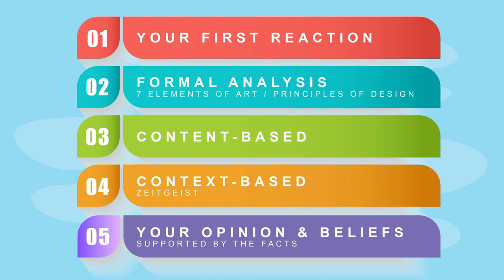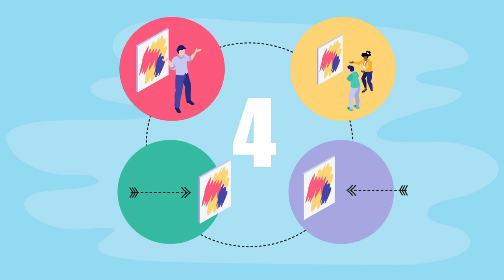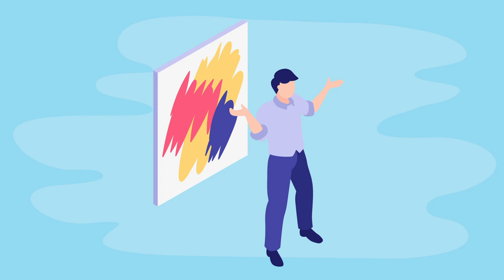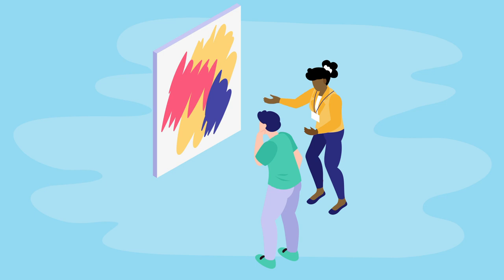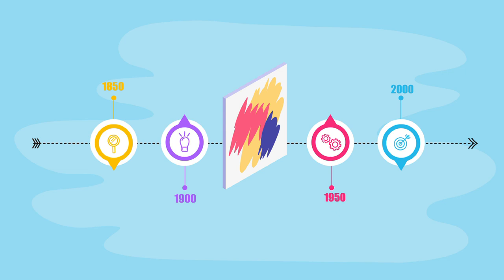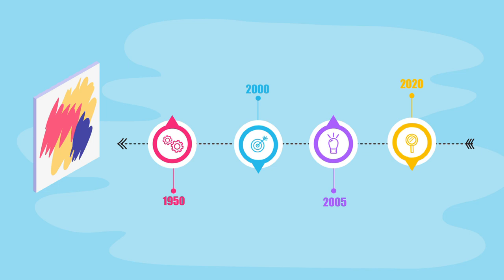There are four perspectives you need to take into account when analyzing an artwork. One is what the artist meant to say — what did they want to convey? Then there is your perspective, your own personal interpretation. Then there's the zeitgeist, the time frame in which that artwork was created — the date plays a very important part and gives us lots of clues. And there is hindsight, when we look back at the artwork with a modern interpretation.